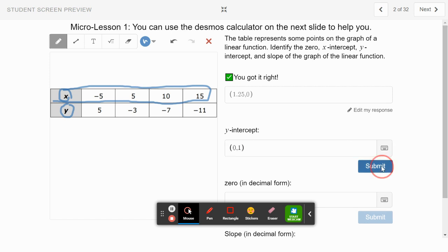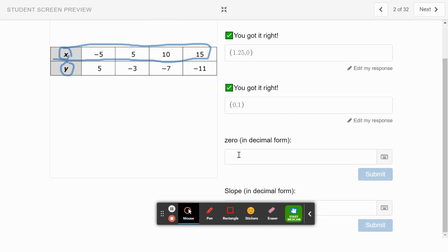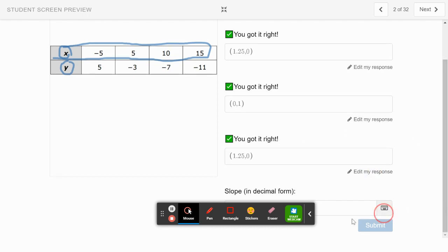Now the zero in decimal form is just the x-intercept, so we put 1.25 and press submit. It said try again because they want us to put it in as a point, so we're going to put in parentheses 1.25 comma 0, submit, and I'm right.